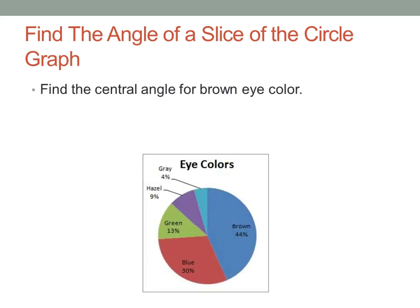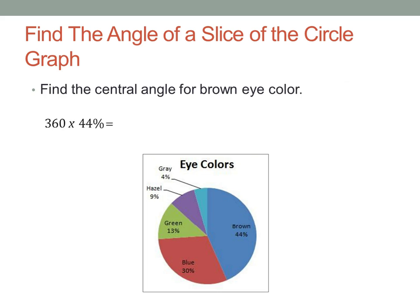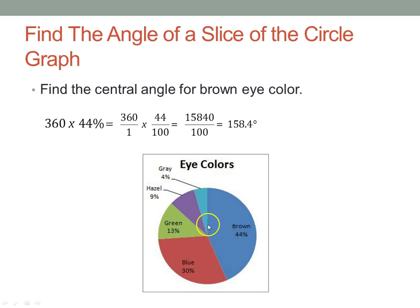Now find the central angle for brown eye color — pause here and come back. Welcome back. We should have 360 degrees times 44% for brown. Making them both fractions and multiplying across gives 158.4 degrees for the central angle. Remember, the central angle is shown right here for brown.